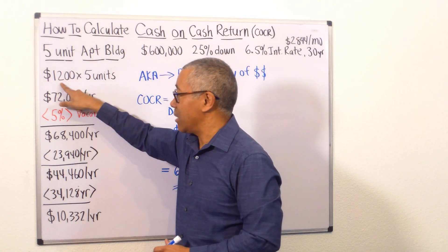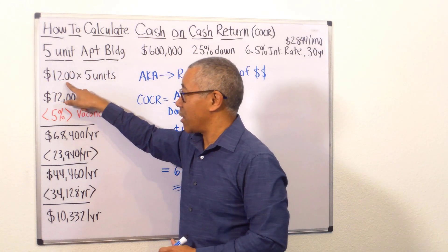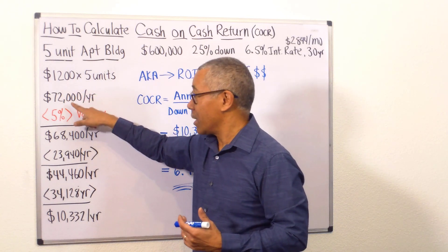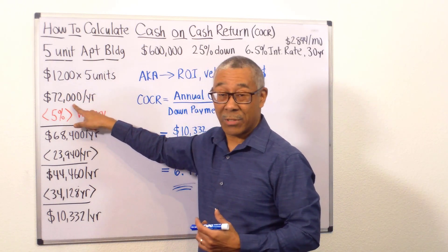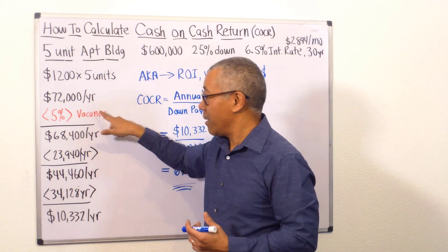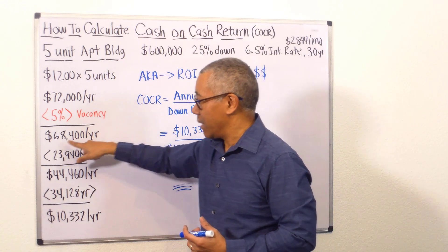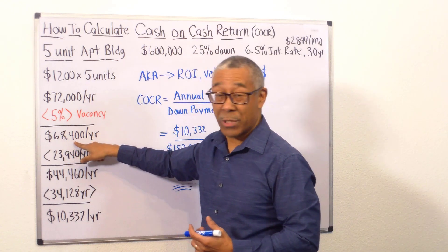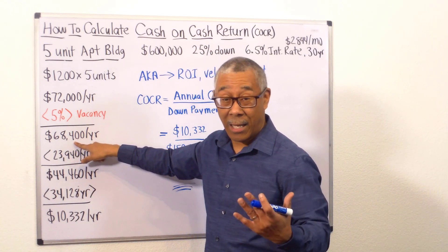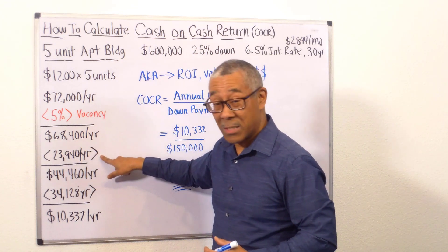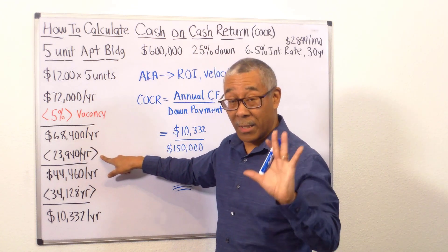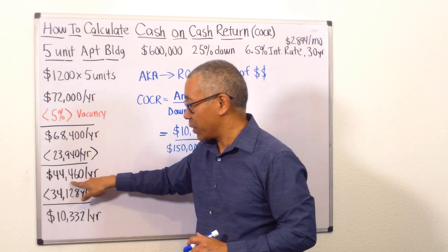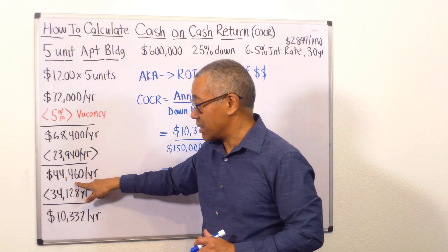I have five units. Each of the units rents for $1,200 per month. Five units equals $72,000 a year, minus vacancy equals $68,400 a year in income. I subtract my expenses from this income, and this is my net operating income of $44,460.